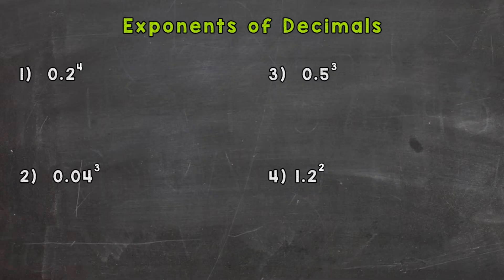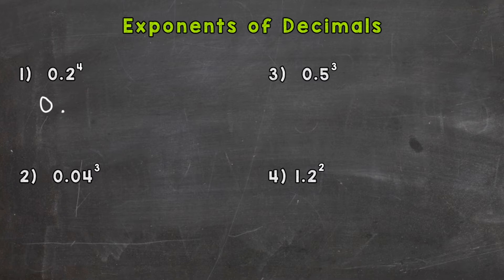Let's jump right into number one, where we have two tenths to the power of four. This means we're going to multiply that two tenths by itself four times, because that's what the exponent indicates to do. So let's take the two tenths and expand it out four times.